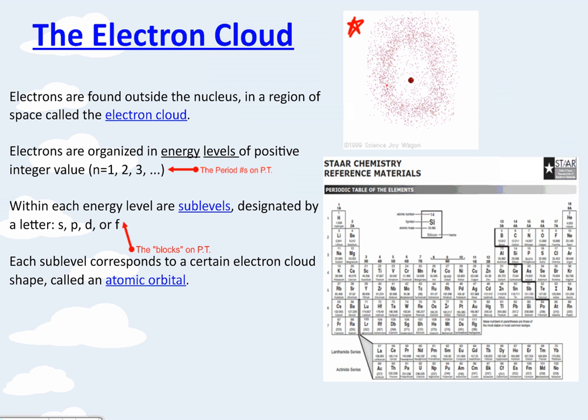Electrons are organized in energy levels of positive integer value. It's the period number on the periodic table. So I have a periodic table for you to look at. Here are the period numbers. So if I say that an electron is in energy level 1, then I'm talking about period 1 on the periodic table. Within each energy level are sublevels, designated by blocks labeled S, P, D, or F.